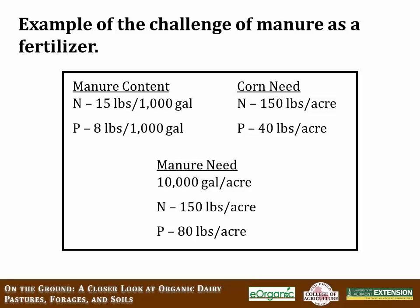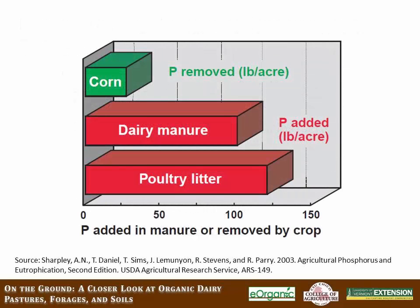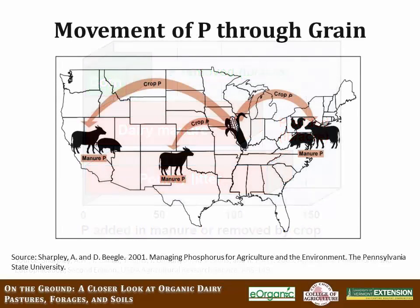It's a lot easier to increase phosphorus levels than it is to decrease them. Generally, the phosphorus in the manure being applied versus what the crop is actually removing is far less. The other issue we have on most farms is that we're importing grain. Because you're importing nutrients, it's essentially a fertilizer source that ends up — the excess — in your manure. On most farms, you're importing far more phosphorus, mainly in the form of grain, than you are exporting in milk.